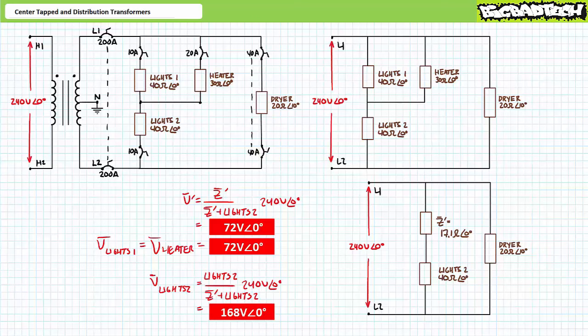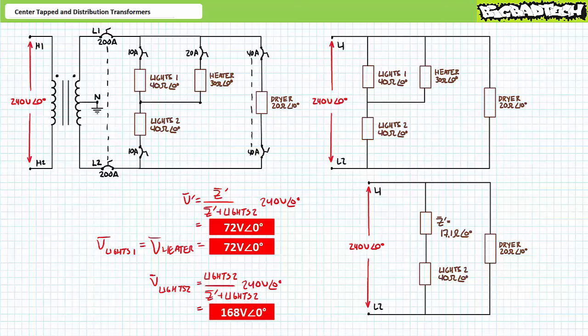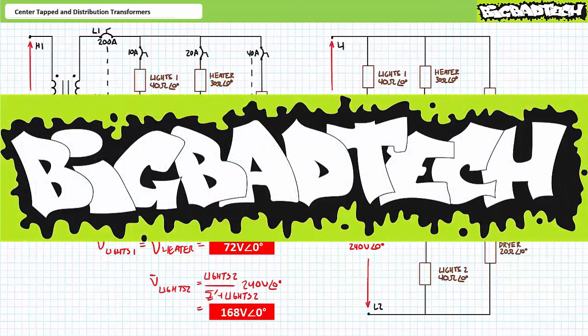That about wraps up this lecture. In conclusion, this lecture examined center tap transformers in split phase or single phase three-wire systems. We examined split phase systems in the balanced and unbalanced condition and discussed the role of the neutral wire. Remember to review these concepts as often as you need to really drive it home. Thank you very much for your attention and interest, and we'll see you again during the next lecture of our series. Remember to tell your lab partner about this resource and be sure to check out the Big Bad Tech channel for additional resources and updates.